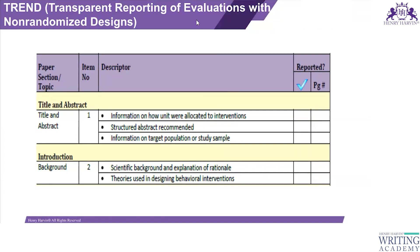The way of writing using TREND guidelines — the introduction, background, title, and so on — will be the same as other guidelines. The key difference is in reporting the methodology, because here you follow a non-randomized method. So you will not write anything about randomization, such as how randomization was done or what the allocation ratio is. The word 'non-randomized' should appear in the title.